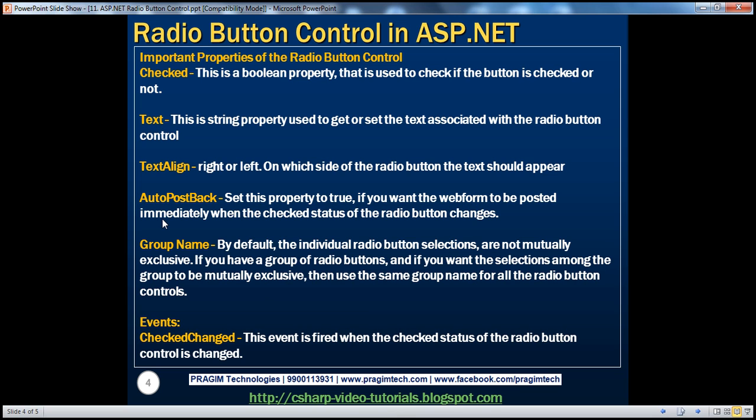AutoPostBack is similar to other controls like the text box or drop-down list control. We set this property to true if we want the web form to be posted immediately when the checked status of the radio button changes. The text box control exposes a TextChanged event that is by default cached in the view state, and that event fires only when you post the web form back to the server by clicking a button control.